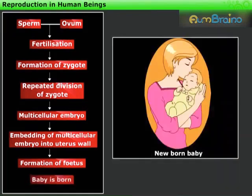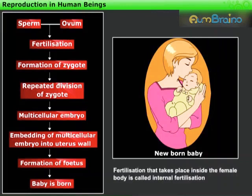When the development of the fetus is complete, the mother gives birth to the baby. Fertilization that takes place inside the female body is called internal fertilization.